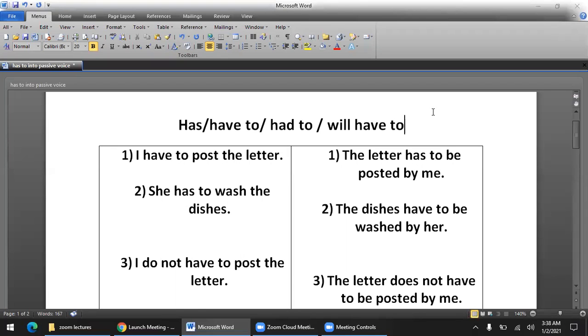Hi everyone, let's learn about has to, have to, had to, and will have to structures and how to change these to passive voice. We'll discuss the theory of when to use each structure depending on the condition or situation. Has or have to is used in certain conditions, had to in other conditions, and will have to in yet other conditions. These structures indicate compulsory or obligatory conditions. In the present, we use has or have to; in the past, had to; and in the future, will have to.